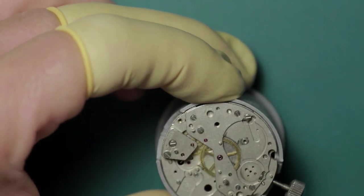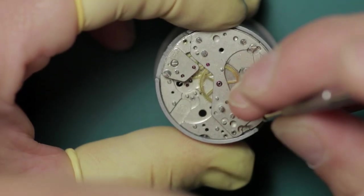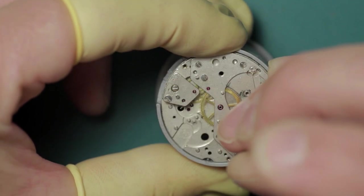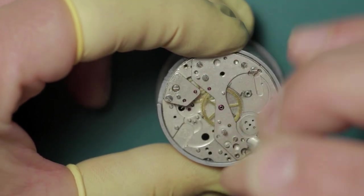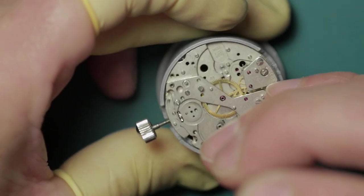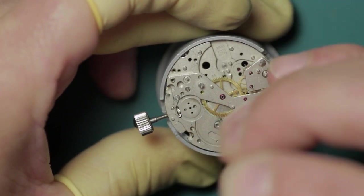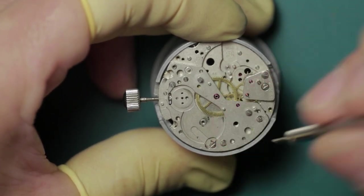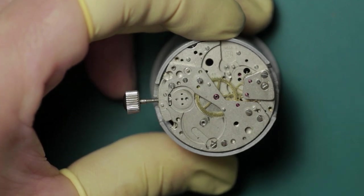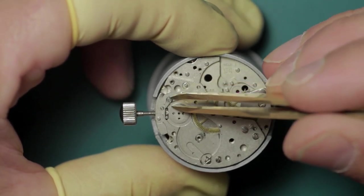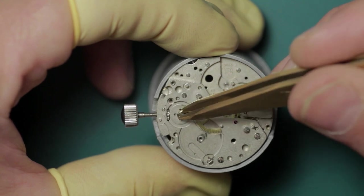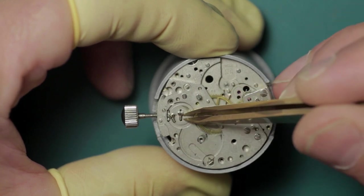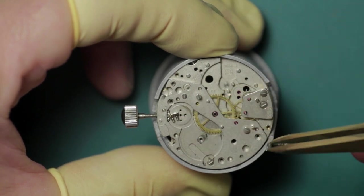Now we're down to the basic works of the train and we're going to go ahead and remove the three securing screws for the barrel and train bridge and the single securing screw for the escape and fourth wheel bridge.